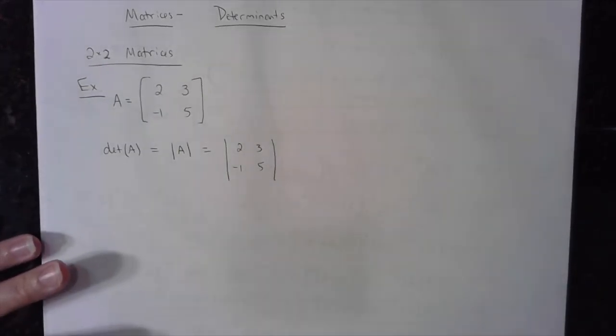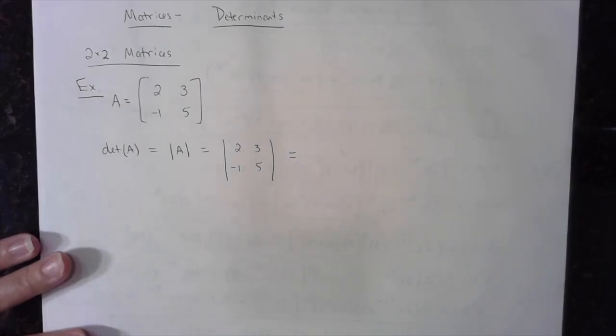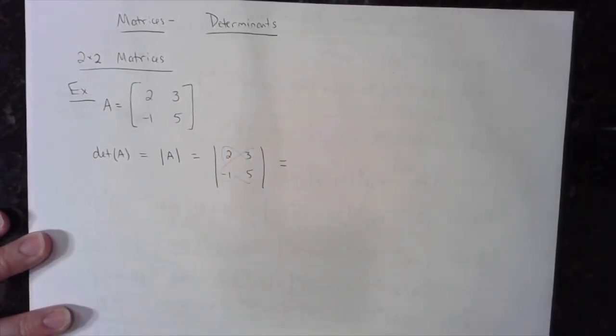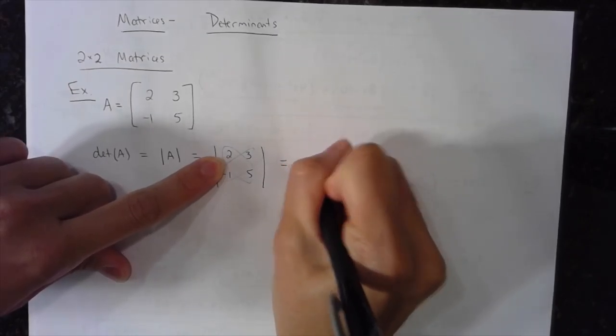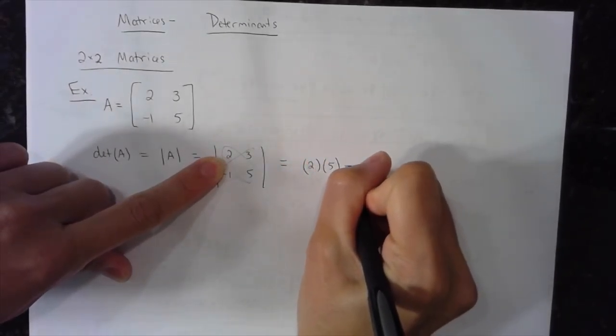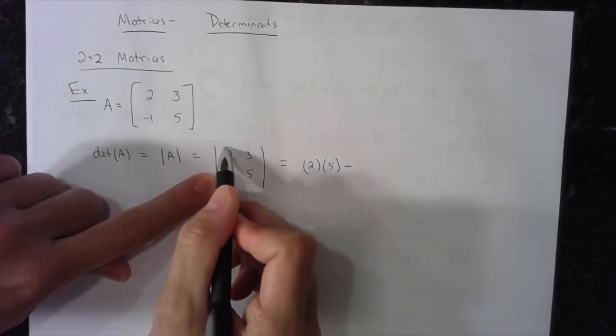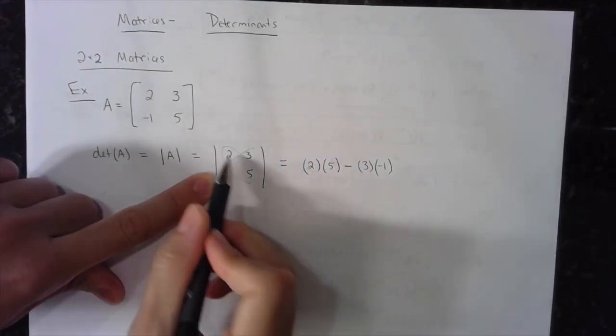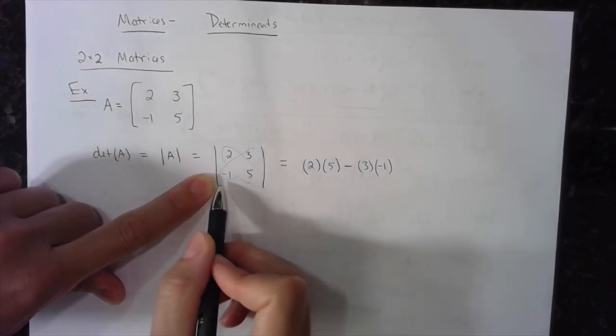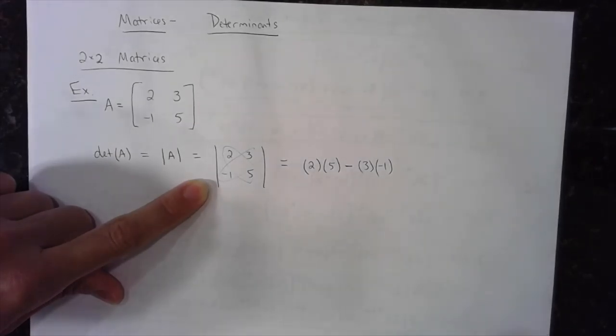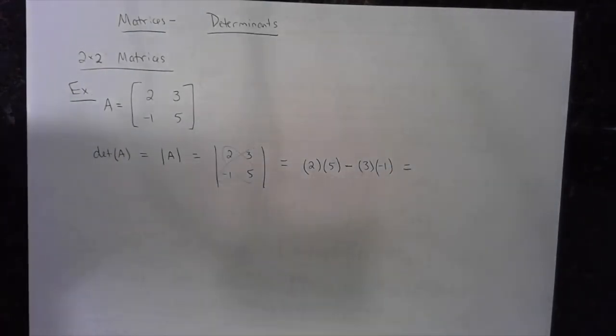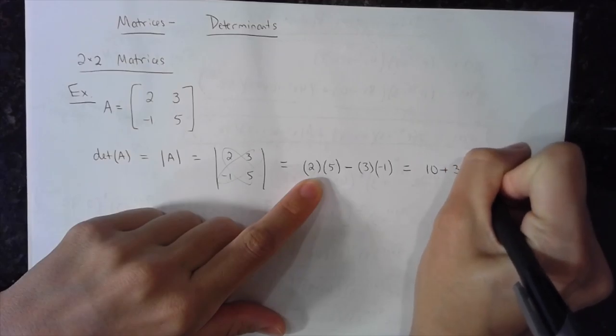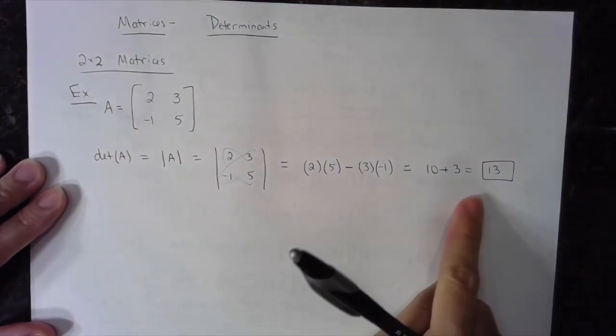The way that we find the determinant of a two by two matrix is basically this guy and this guy, we're going diagonally: two times five minus this diagonal, two times five minus three times negative one. This diagonal minus this diagonal. So as you can see, the outcome of a determinant gives us a scalar, a basic number. When I simplify this I get ten plus three or thirteen. So the determinant of this two by two matrix is equal to thirteen.